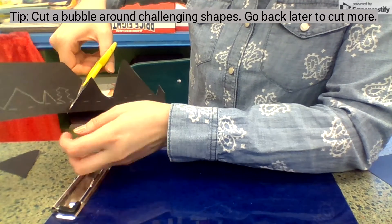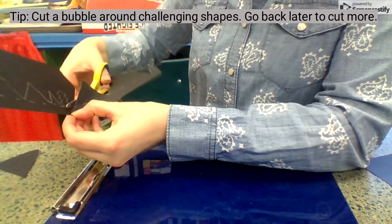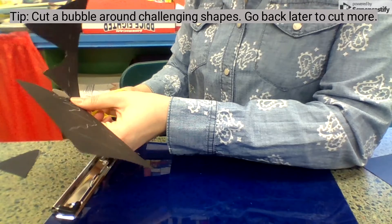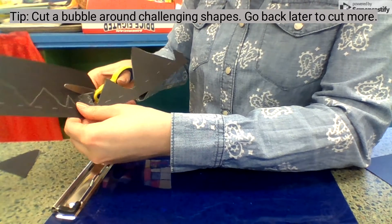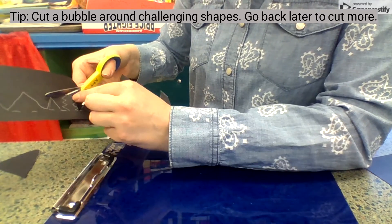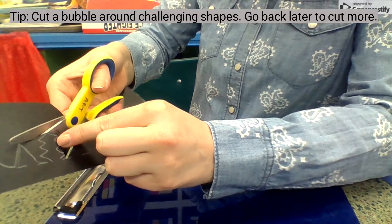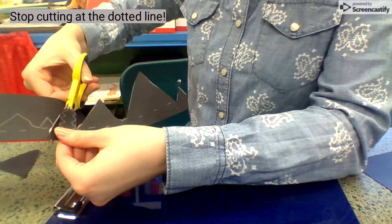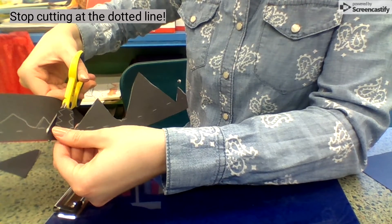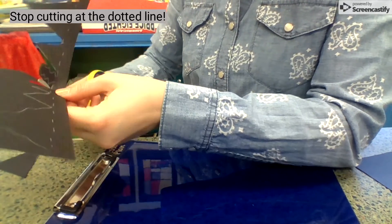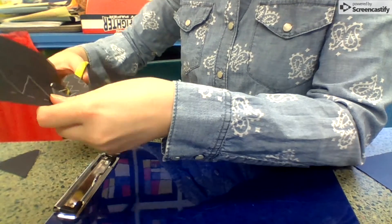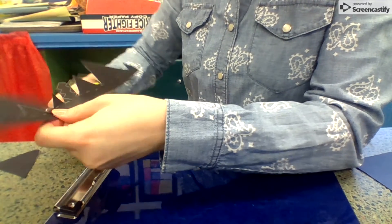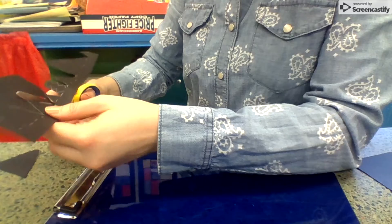Now, when you get to a really complicated tree, this is what I'm going to do. I'm going to cut a bubble around it for now and go back later to cut out all those little pieces that I have. So I'm saving it for later. When I get to my dotted line, what do I do? Stop. All right. So I'm going to keep cutting this out so that I can keep my landscape all in one piece.